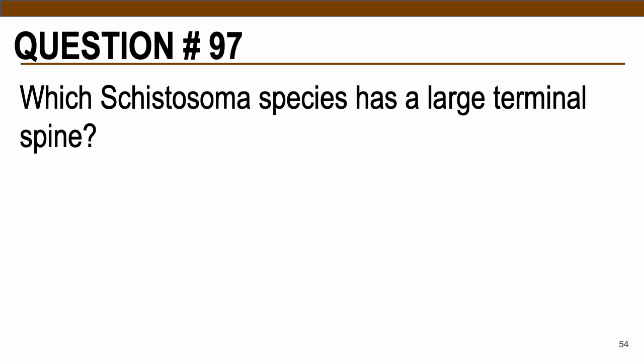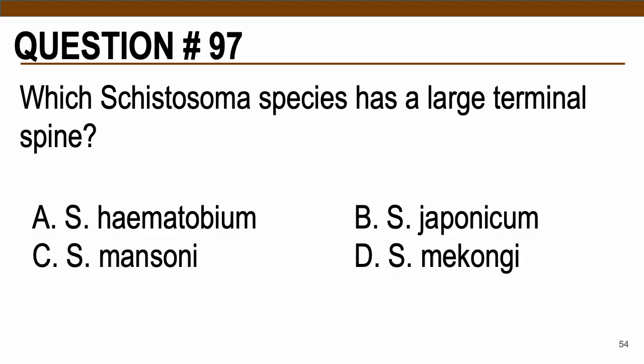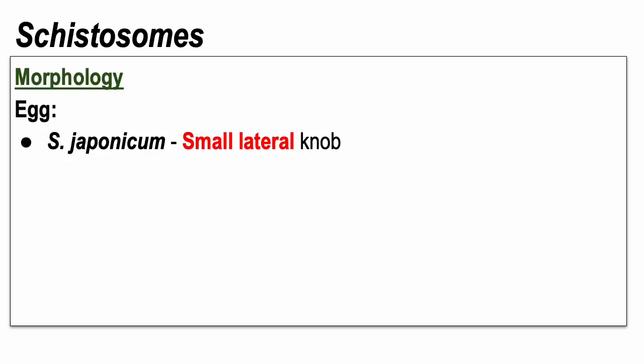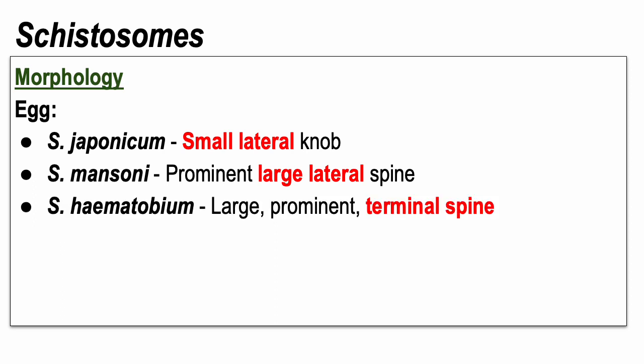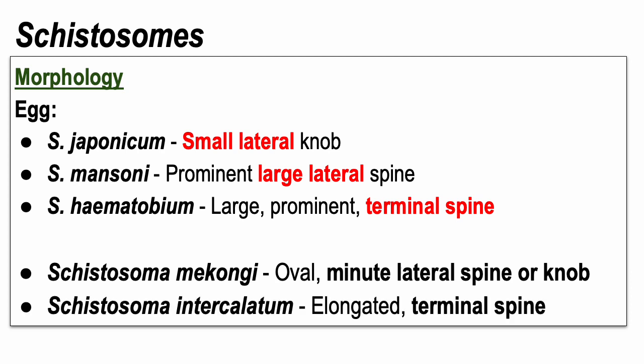Question number 97: Which Schistosoma species has a large terminal spine? Choices: A — S. hematobium, B — S. japonicum, C — S. mansoni, D — S. mekongi. The correct answer is letter A, S. hematobium. For differentiation of blood flukes by egg morphology: S. japonicum has a small lateral knob; S. mansoni has a prominent large lateral spine; S. hematobium has a large prominent terminal spine. For non-human schistosomes, S. mekongi has an oval minute lateral knob similar to japonicum, while S. intercalatum has an elongated terminal spine similar to S. hematobium.